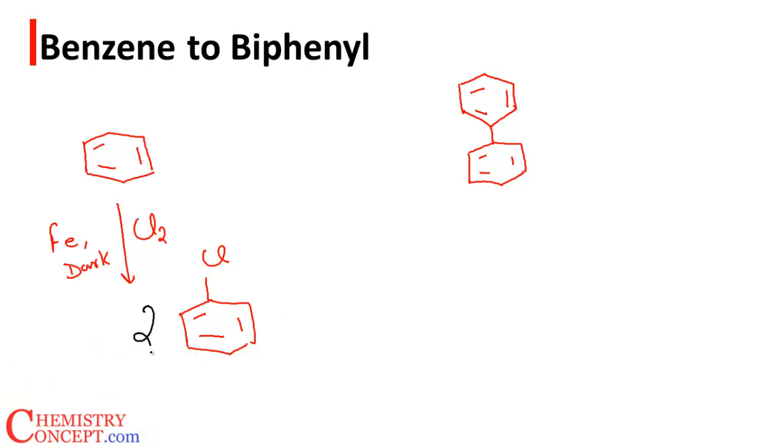Let me take two moles of chlorobenzene and react it with sodium in presence of dry ether. We know that two NaCl comes out and the benzene rings get attached to one another.